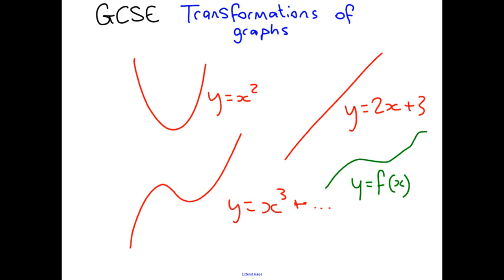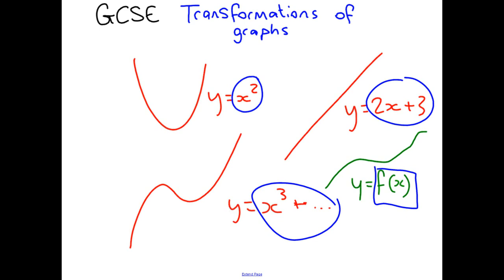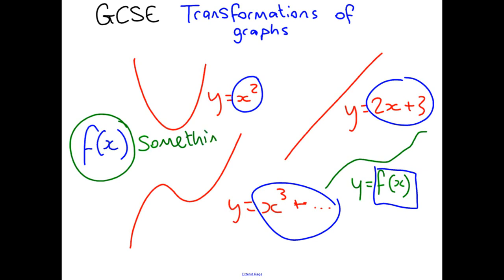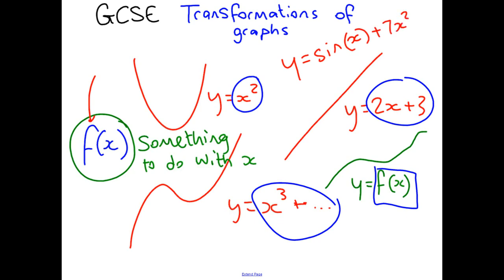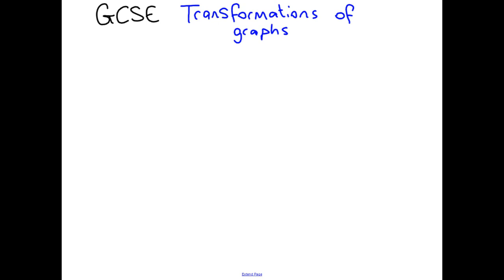The graph could be some random thing and it might just say y equals f of x. All this means is something to do with x — it could be x squared, 2x plus 3, or something to do with x cubed. f(x) should not be something you think you don't know what to do with. It just means anything to do with x. The reason we use the letter f is because it's called 'function of x' — that's just a posh maths way to say 'something to do with x'. It could be x squared, it could be 91x cubed over 112x to the power of 54, or y equals sin x plus 7x squared. The examiner doesn't want to complicate things by telling you exactly what it is, because these rules work for any f(x).